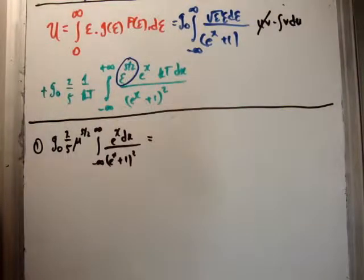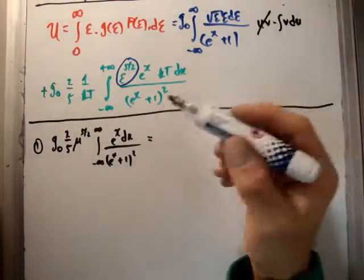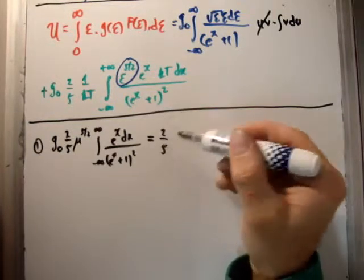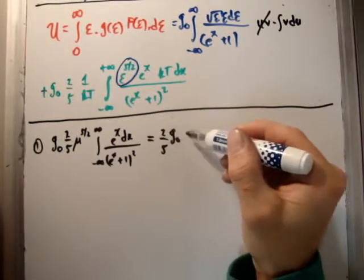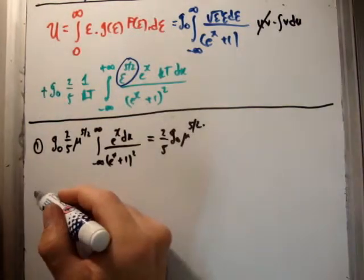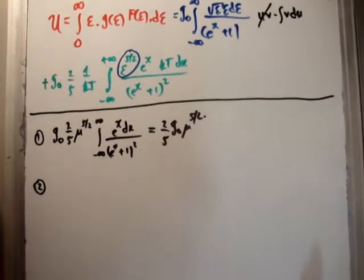Now, the answer to that, just as in the same... I did that in the previous video again, with slightly different numbers. But the answer is going to be 2 fifths g0, mu to the 5 over 2. Look at the previous video if this is mad. Next.